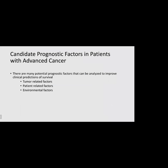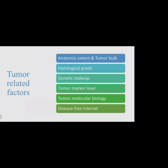Candidate prognostic factors in patients with advanced cancer include tumor-related factors, patient-related factors, and environmental factors. Tumor-related factors include anatomic extent and tumor bulk, histological grading, genetic makeup, tumor marker level, tumor molecular biology, and disease-free interval. Anatomic extent — the size and location of the tumor — matters because a cancer limited to one organ may be more easily treated with surgery, chemotherapy, or radiotherapy, and may have better prognosis than a metastatic cancer.